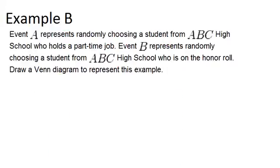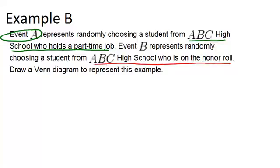Now let's look at example B. It says event A represents randomly choosing a student from ABC High School who holds a part-time job. So anyone from ABC High School who holds a part-time job will be in circle A. Event B represents randomly choosing a student from ABC High School who is on the honor roll. So anyone from ABC High School who is on the honor roll will be in circle B.